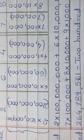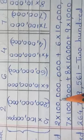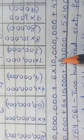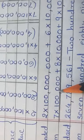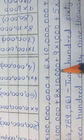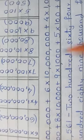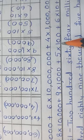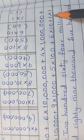Now let's see the expanded form of this number. The expanded form is: 2 × 100,000,000 = 200,000,000, plus 6 × 10,000,000 = 60,000,000, plus 4 × 1,000,000 = 4,000,000, plus 7 × 100,000 = 700,000, plus 8 × 10,000 = 80,000, plus 9 × 1,000 = 9,000, plus 5 × 100 = 500, plus 6 × 10 = 60, plus 1 × 1 = 1.